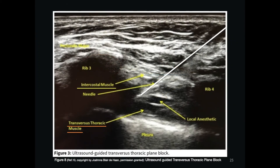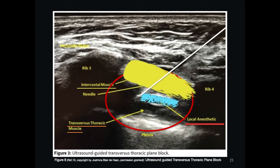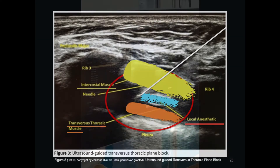In this ultrasound real image, the injection of local anesthesia is shown into the transversus thoracic plane, with the spread of local anesthesia between the internal intercostal muscle and the transversus thoracic muscle.